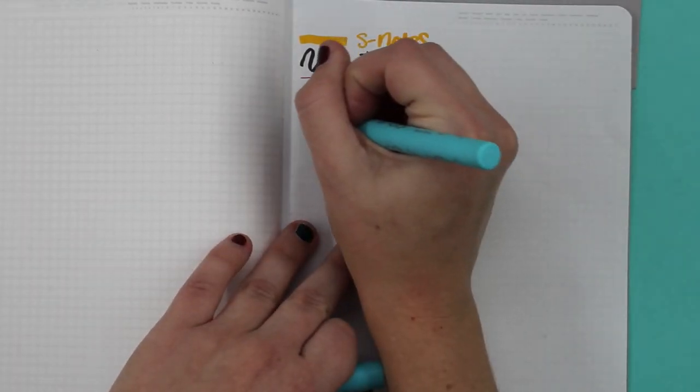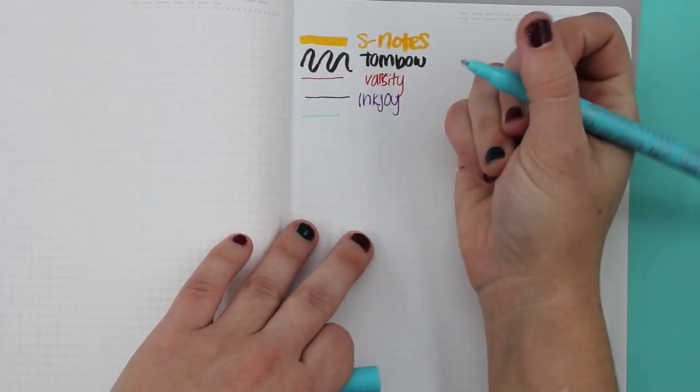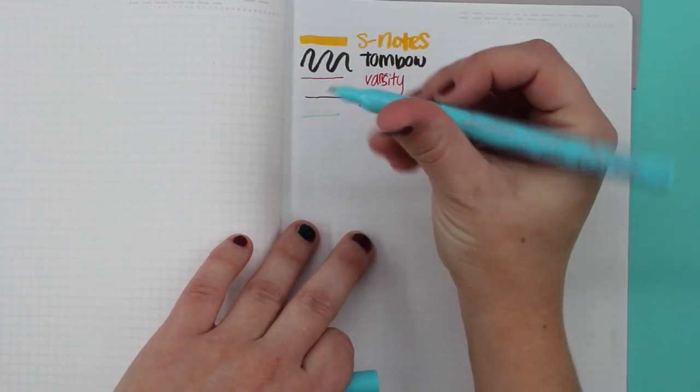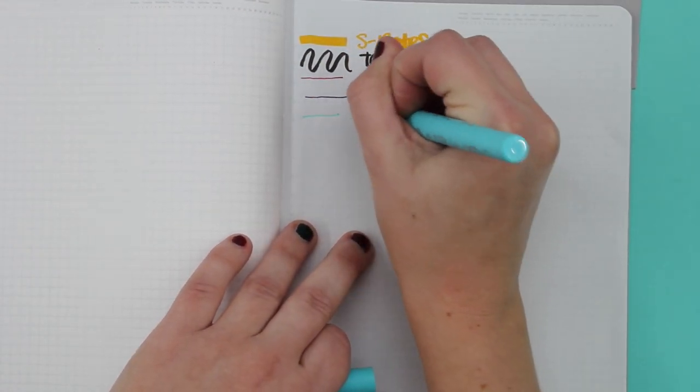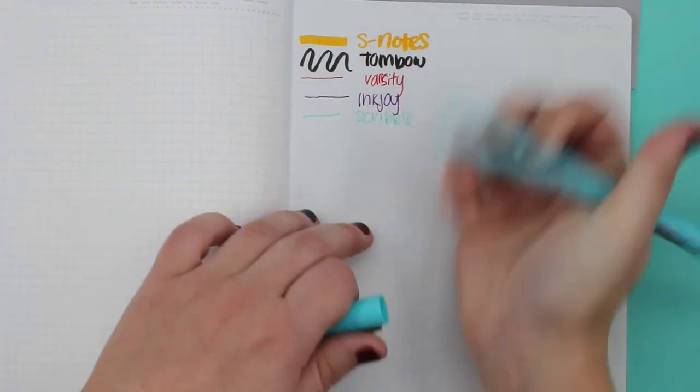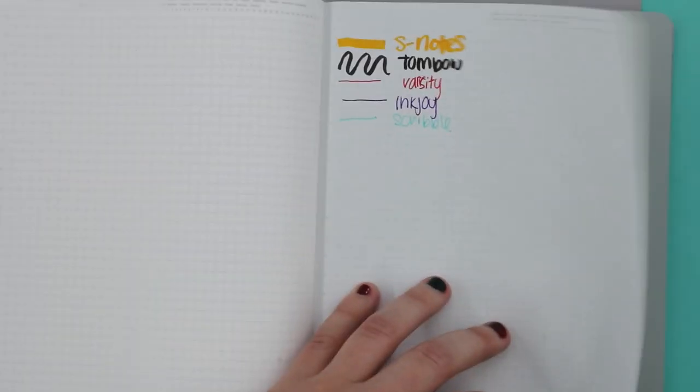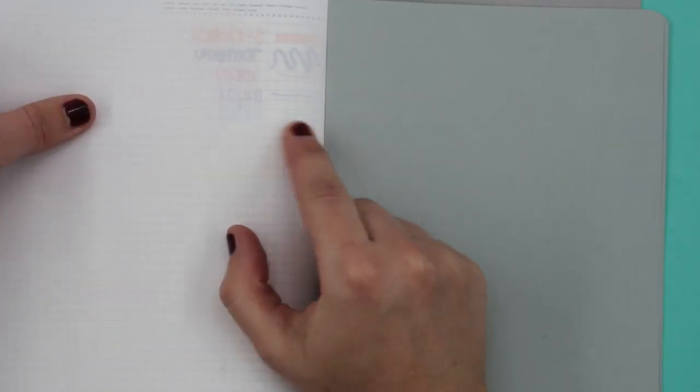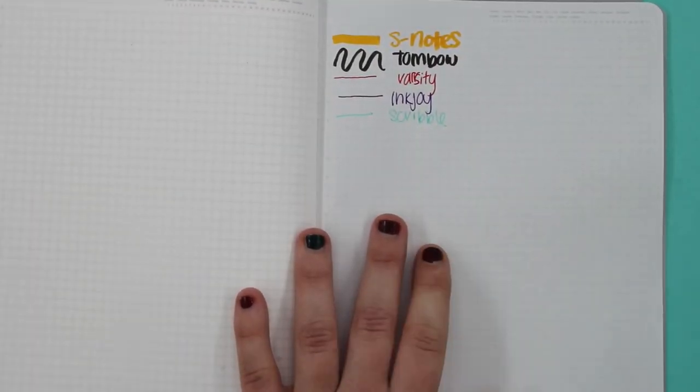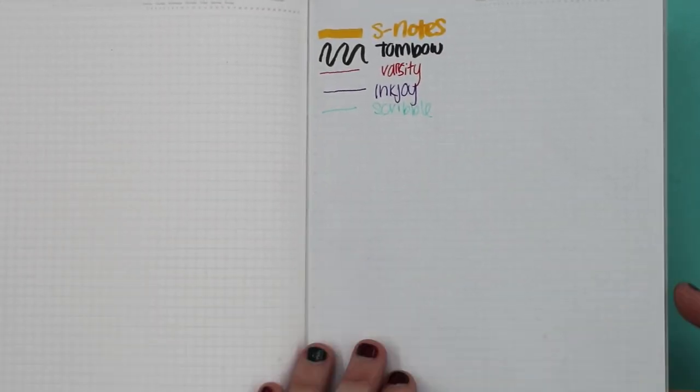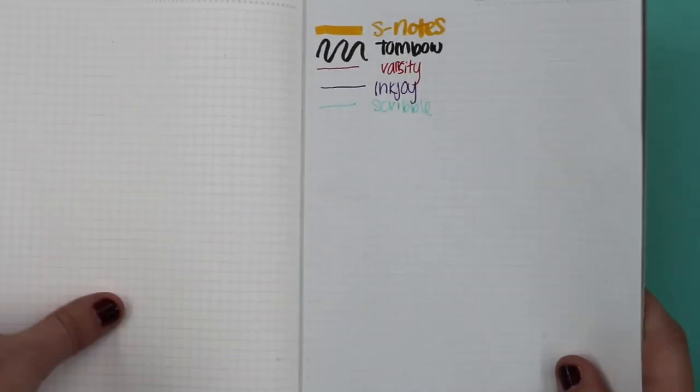Now our last is our felt tip, and so we'll just call this a scribble. So let's take a look. And look at that, no bleed through. So all of these pens are an A-plus on the Stalogy paper. So that is great.